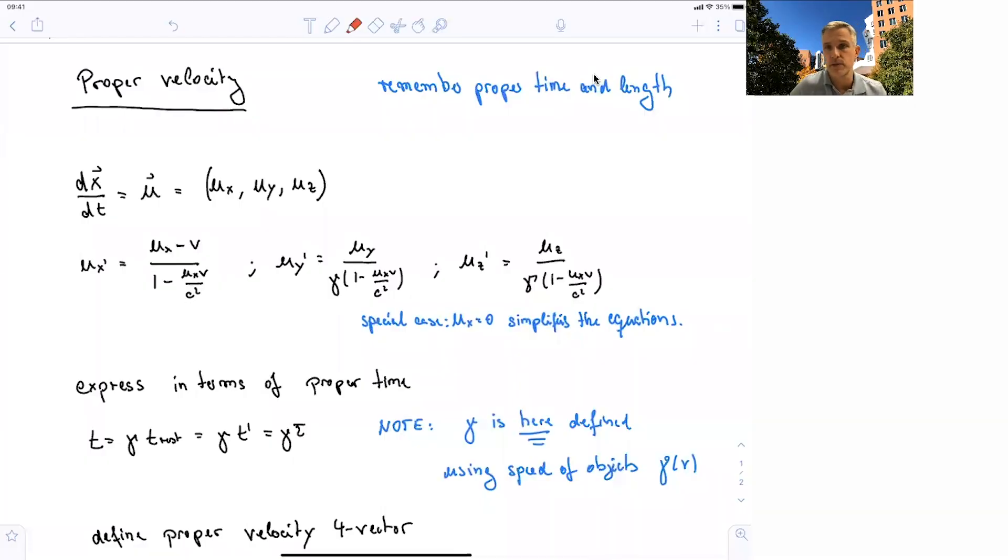Welcome back to Special Relativity A20. In this section, we want to talk about proper velocity. We have seen already concepts of proper time and proper length as the time and the space are seen in the object's own reference frame.